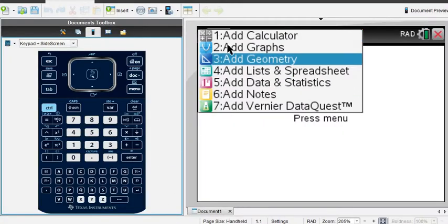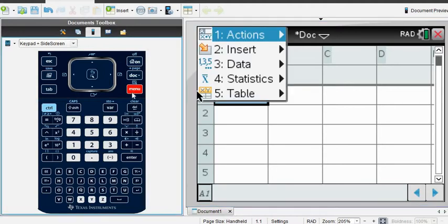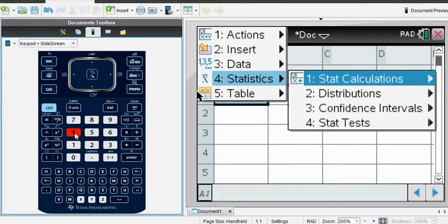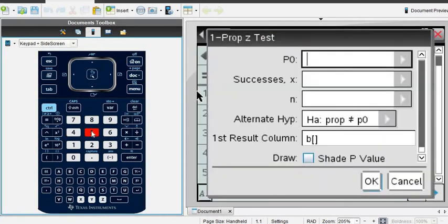All right, so when I grab my calculator, I'm going to go ahead and do this in a lists and spreadsheet screen. That's the way this calculator will allow you to draw the model. And then I'm going to go into menu and statistics, and then I'm going to choose stat tests. So that was menu, statistics, stat tests, and then we would find the one proportion Z test, which is option 5.